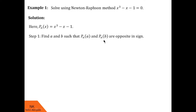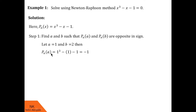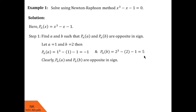For this, you have to use a trial and error technique — keep changing values for A and B and check for what values Pn(A) and Pn(B) are opposite in sign. For this example, I let A = 1 and B = 2. Then Pn(A) = 1³ − 1 − 1 = −1, and Pn(B) = Pn(2) = 2³ − 2 − 1 = 5. Clearly, Pn(A) and Pn(B) are opposite in sign, so the root lies between A and B, that is, between 1 and 2.